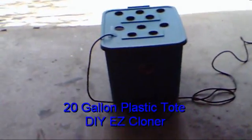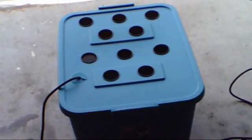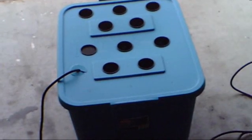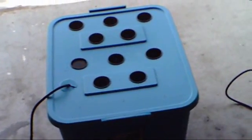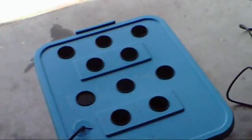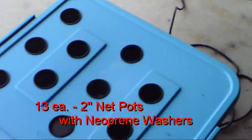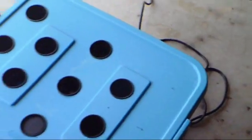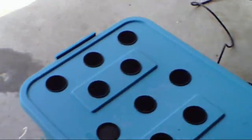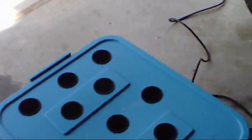Alright, I've just finished up with the do-it-yourself easy cloner. I purchased this 20-gallon Sterilite tote at Family Dollar for about 10 bucks. I spent another $10 on net cups. I'm actually short about three right now, but I have to order some more. These also came with some neoprene inserts and those fit down in the cups.